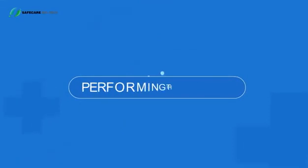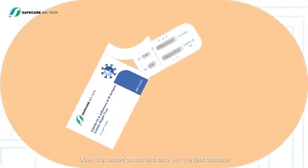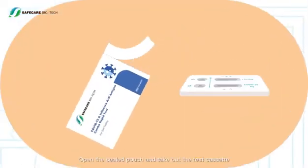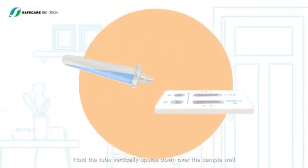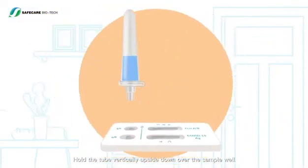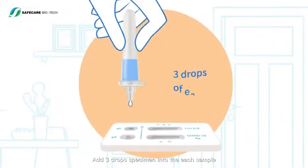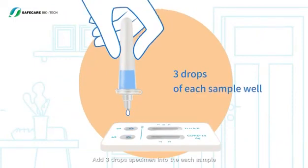Performing the test: open the sealed pouch and take out the test cassette. Hold the tube vertically upside down over the sample well. Add three drops of specimen into each sample well by gently squeezing the sides of the tube.